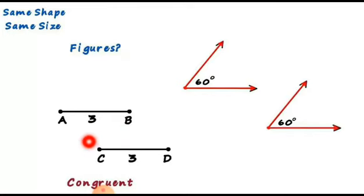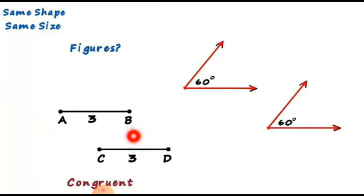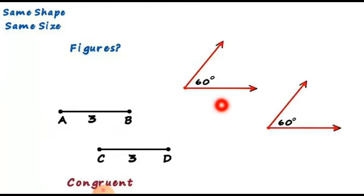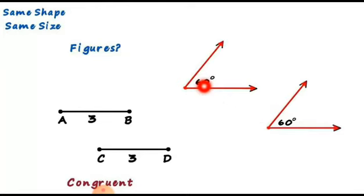Line segment AB has three units and line segment CD also has three units, so both are concurrent figures.